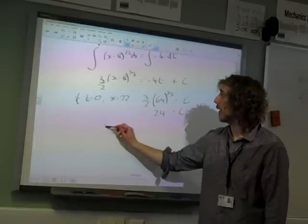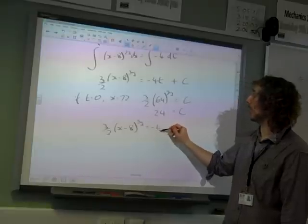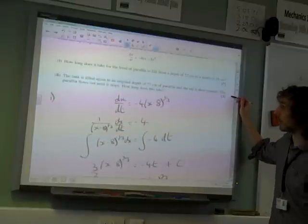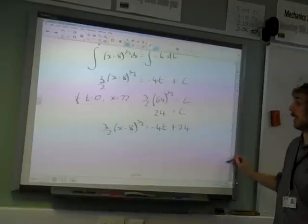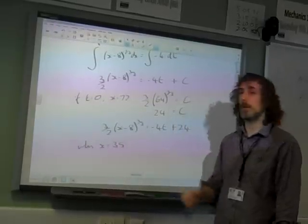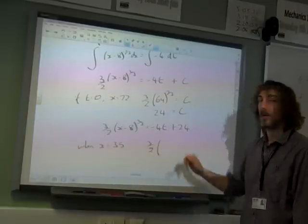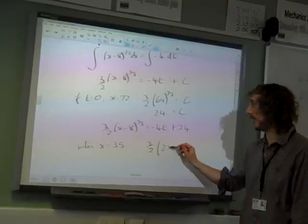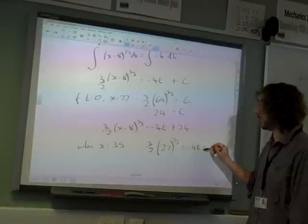So we've got 3 over 2 times (x minus 8) to the 2 thirds is minus 4t plus 24. Now, that's our equation. What we're supposed to do with it: how long does it take for it to fall from 72 to 35? So when x equals 35, we want to find what t is. If x equals 35, we've got 3 over 2 times, again, how convenient? 35 take 8 happens to be 27, which is also a very nice number to have in there. Minus 4t plus 24.